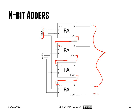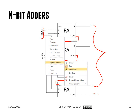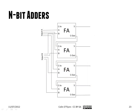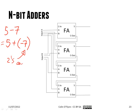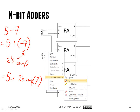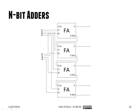To create a subtractor, we use the exact same architecture, except the B input takes a negative number. For example, if we wanted five minus seven, we convert that to five plus negative seven. We know this type of math can easily be done if the number is in two's complement, so this becomes five plus the two's complement of seven, which gives us the original five minus seven.